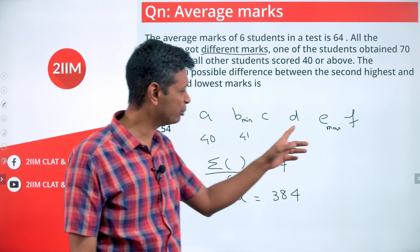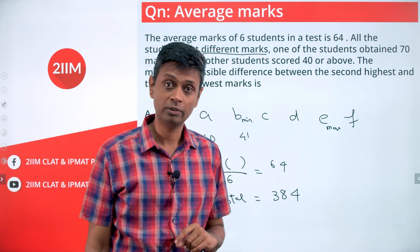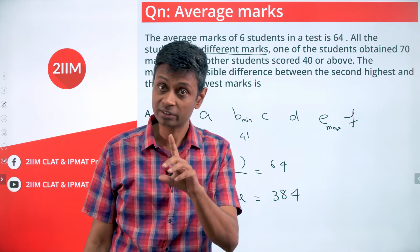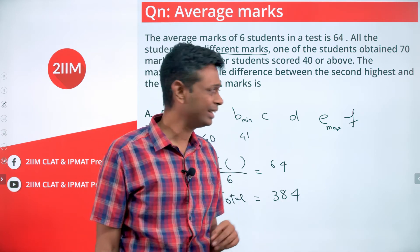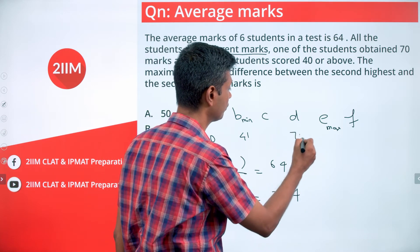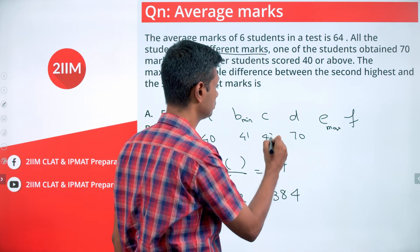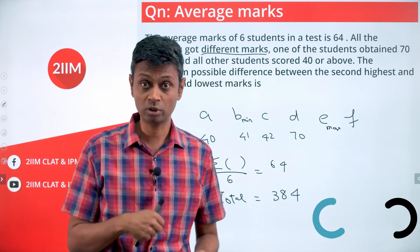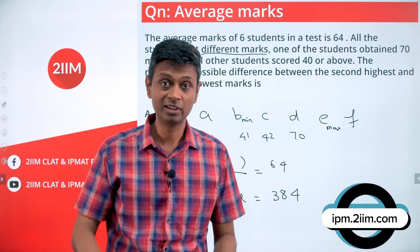Now think about this: we want e to be as high as possible, and that means everything should be as low as possible. I know one of the marks is 70, but that need not be c, in which case d will have to be more than 70. I can put d as 70 and c as 42. It's going to be the best case scenario: 40, 41, 42 as low as possible, 70 because that's given.